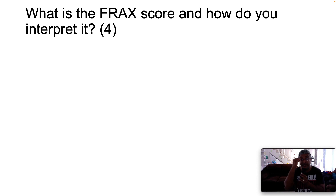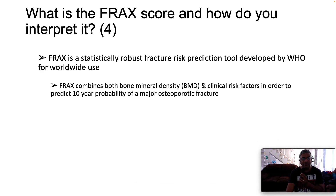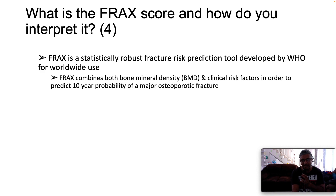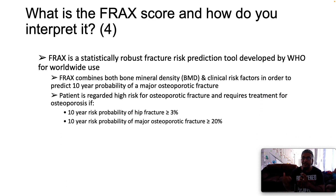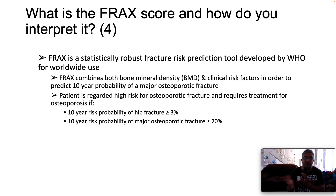What is the FRAX score and how do you interpret it? FRAX is a statistically robust fracture risk prediction tool developed by the World Health Organization for worldwide use. FRAX combines both bone mineral density and clinical risk factors to predict the 10-year probability of a major osteoporotic fracture. A patient is regarded as high risk and requires treatment if the 10-year probability of hip fracture exceeds 3% or the 10-year probability of major osteoporotic fracture exceeds 20%.